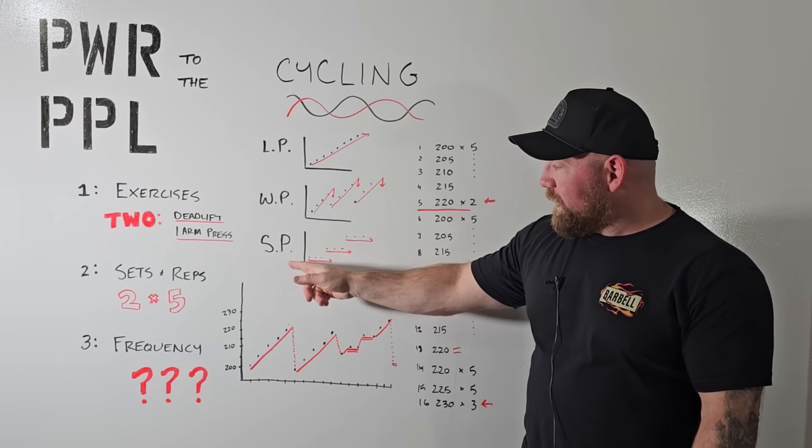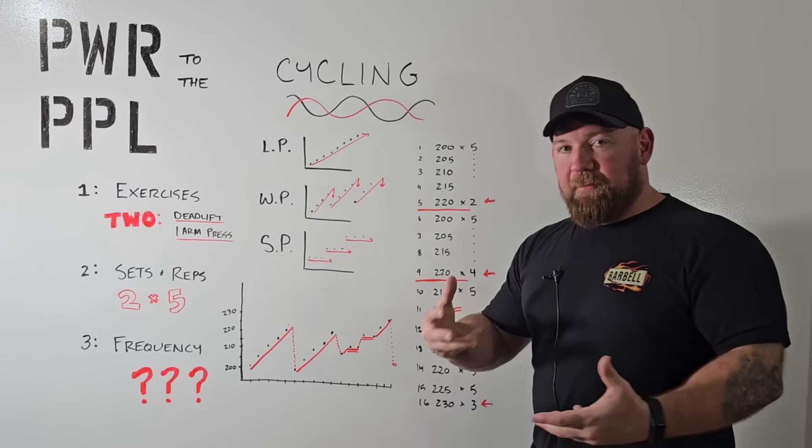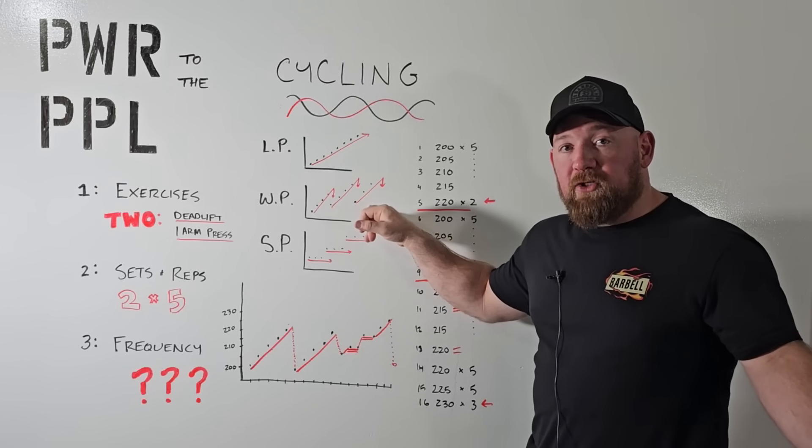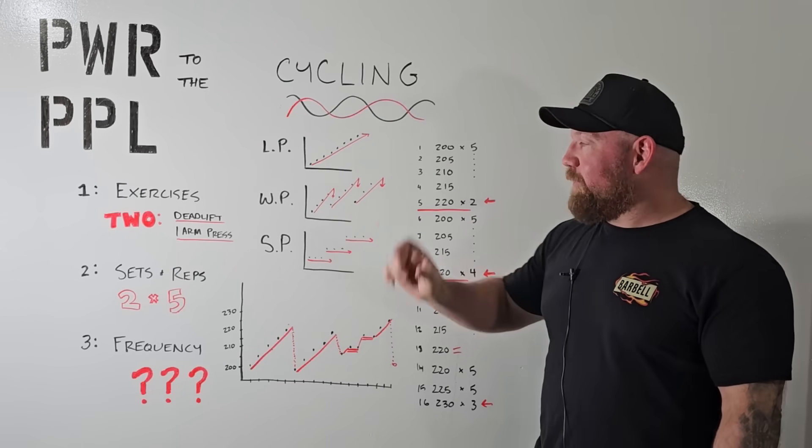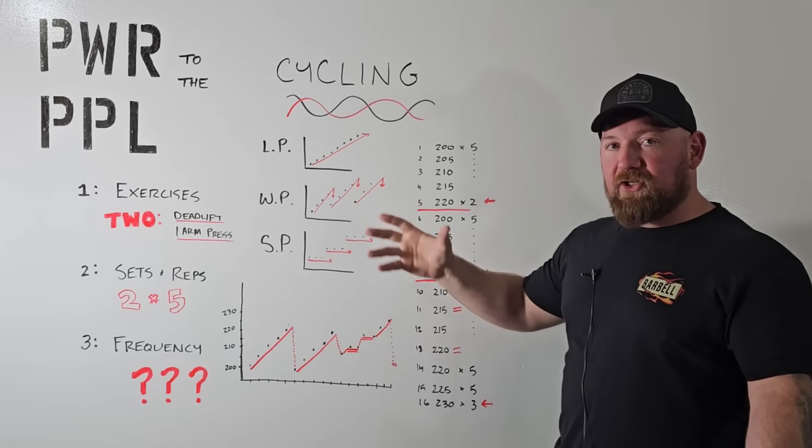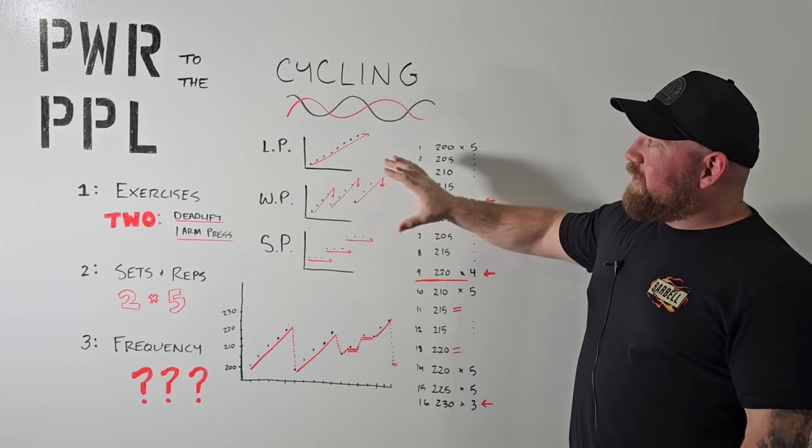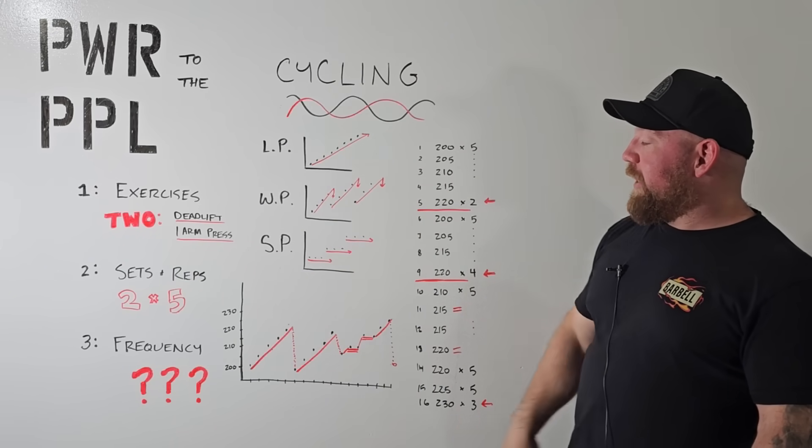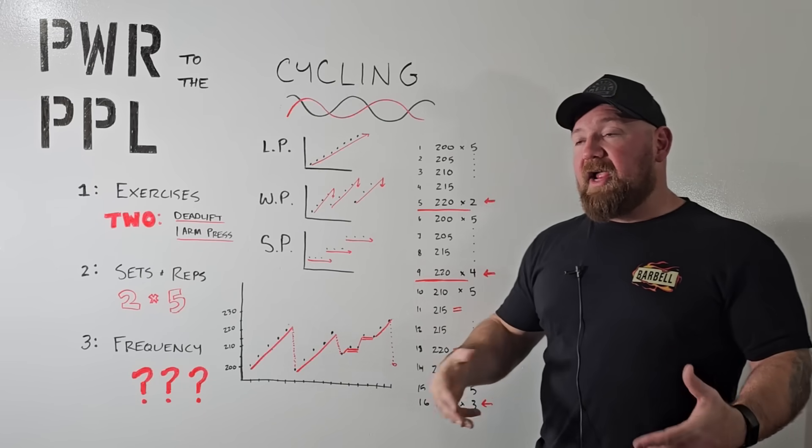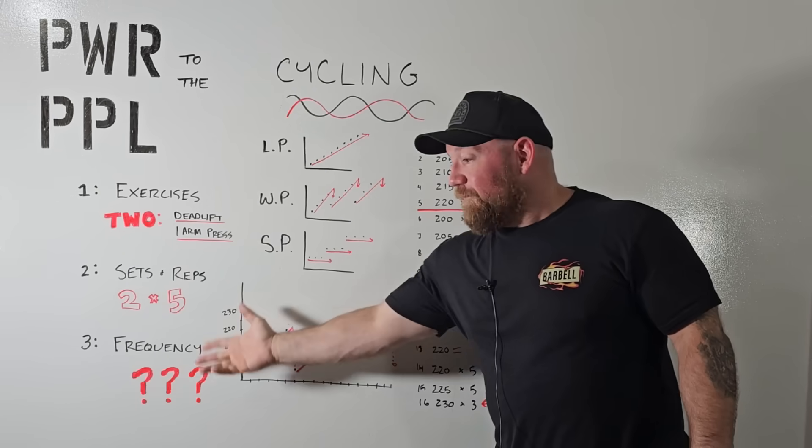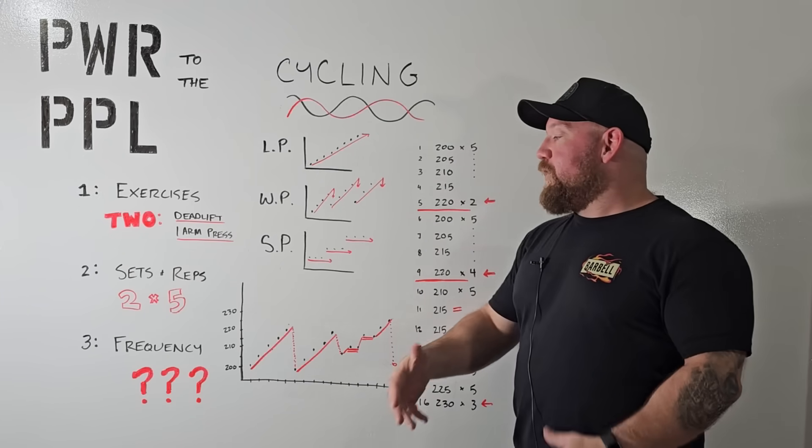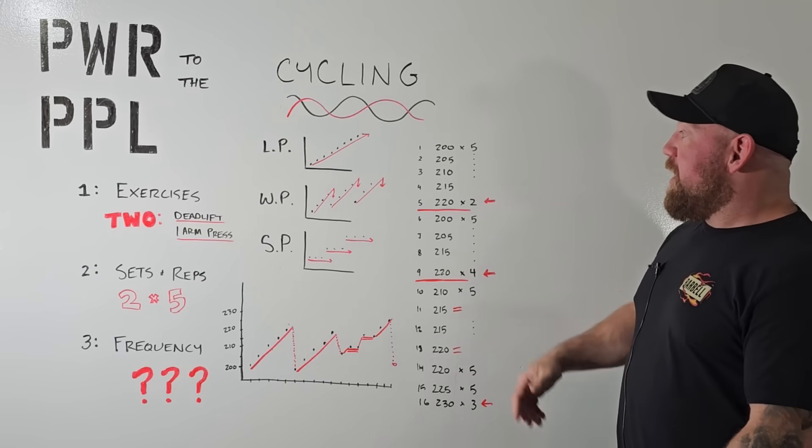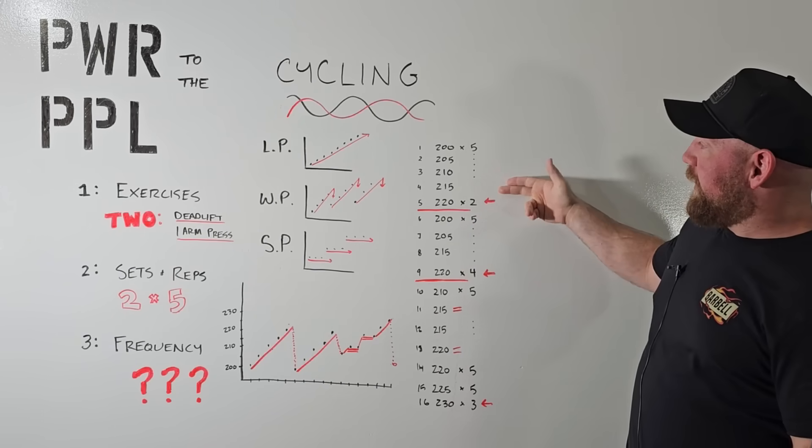Then you have step progressions, which is keeping the weight the same, and after you acclimate to the weight for a few sessions, you can level up. You might recognize like a wave progression: 5-3-1 is a wave progression. Linear progression is programs like Starting Strength and StrongLifts. The thing is, Pavel doesn't give a shit about doing something purely step loading or purely linear progression.